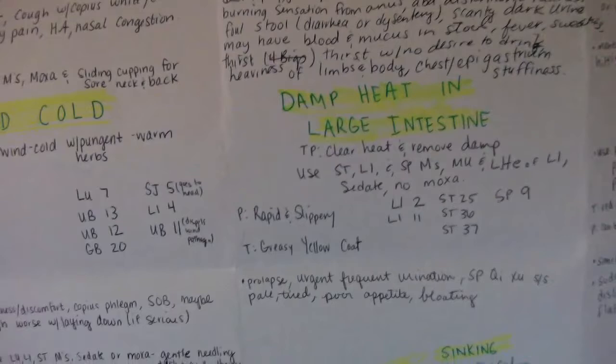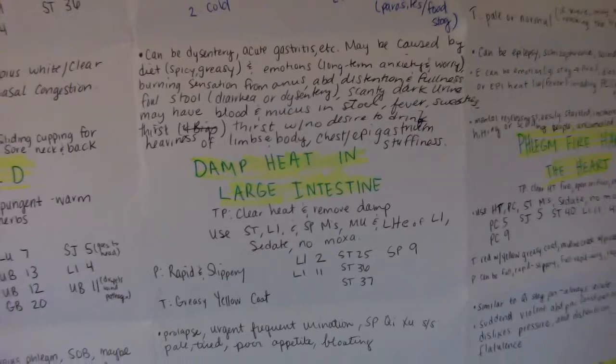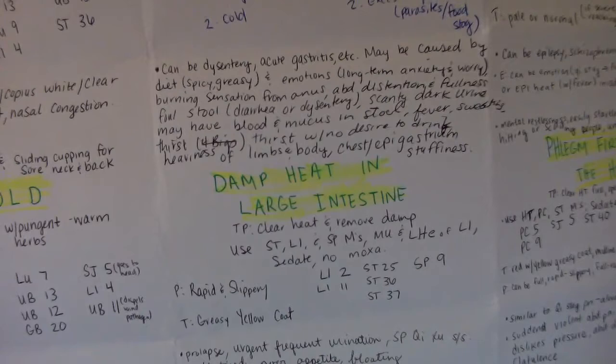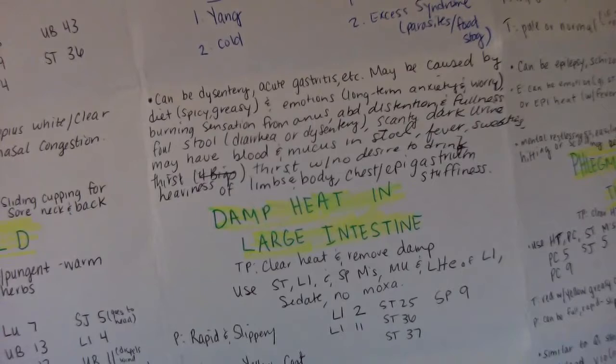Damp heat in the large intestine can be dysentery, acute gastritis, or may be caused by diet, spicy and greasy foods, and emotions, long-term anxiety and worry.